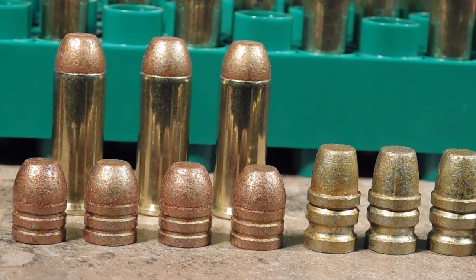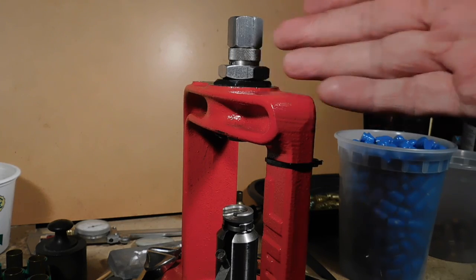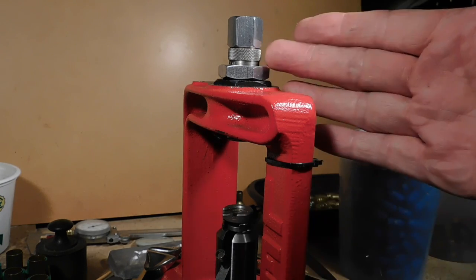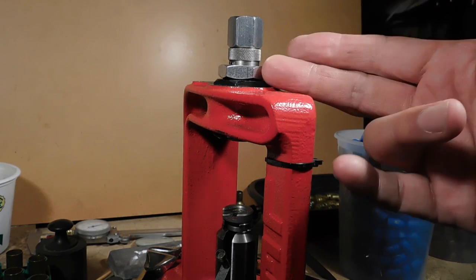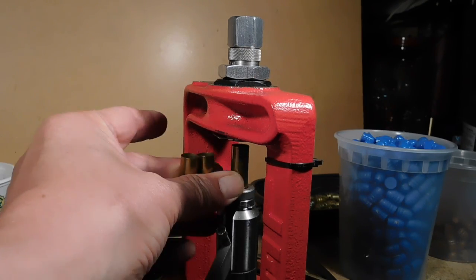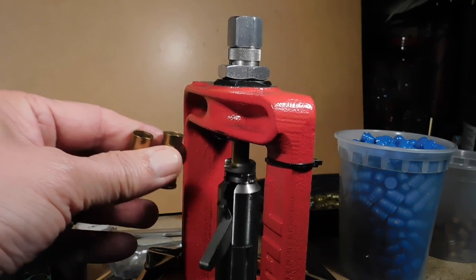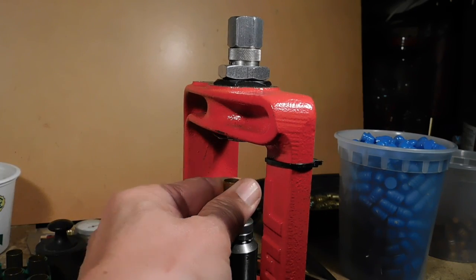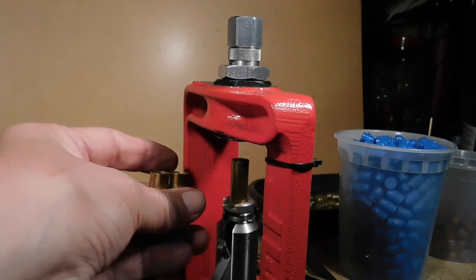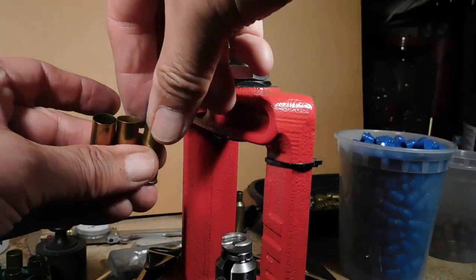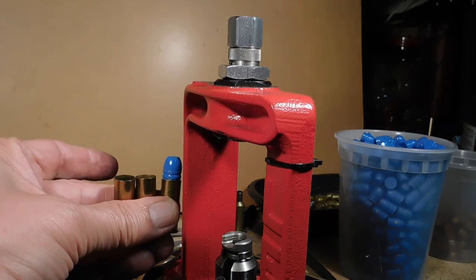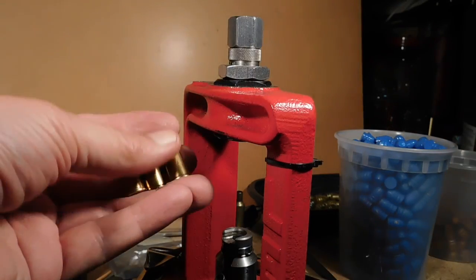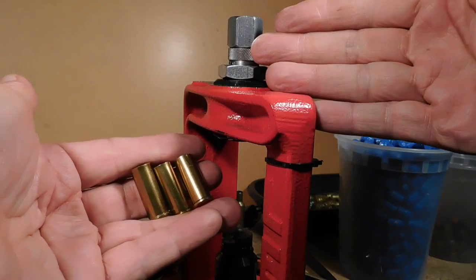Notice to do the maximum accuracy of the Lee Auto Drum powder measure, we're going to neck expand and mouth flare first as a separate procedure. So you see here we go: expand and mouth flare, expand and mouth flare. We're going to do 23 of these and we flare it so that the bullet will enter the case mouth.